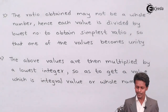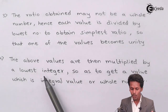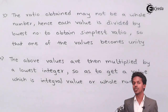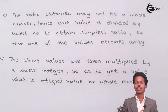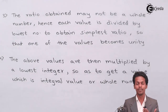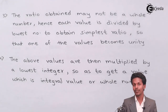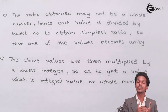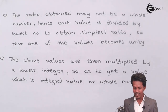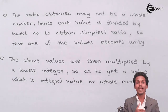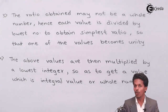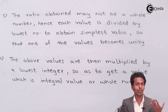Step 4: The above values are then multiplied by the lowest integer so as to get whole number values. If after Step 3 some values are still not whole numbers, we multiply all values by the smallest integer needed — which can be any integer — so that the overall ratio becomes a set of whole numbers.